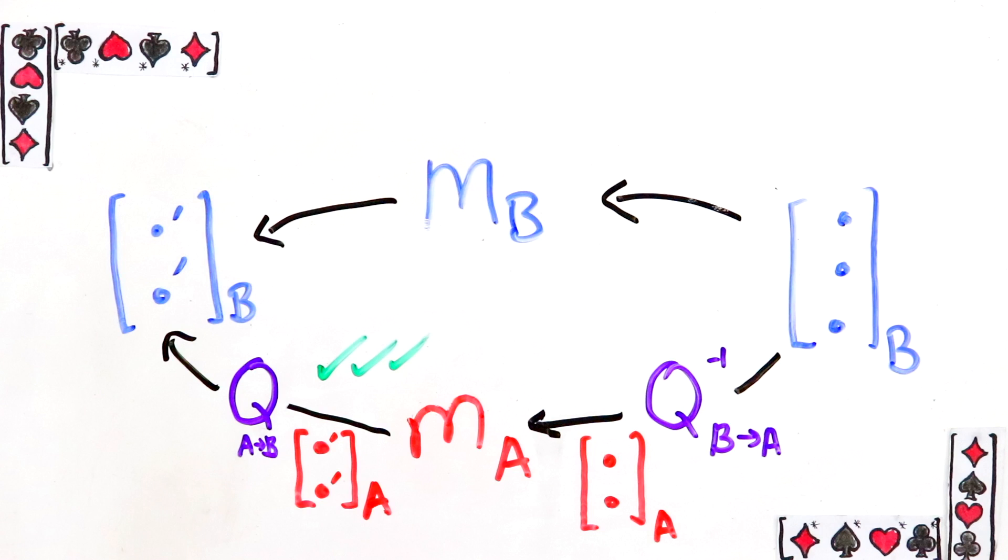Overall what happened is, it got translated to Alice's basis, then you apply Alice's matrix, then you translate it back to Bob's basis. In other words, Bob's matrix is Q MA Q inverse.